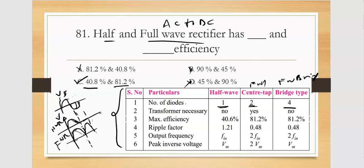The transformer is necessary for center tap but not for bridge type, which uses negative cycles. So the answer is 81.2% and 40.8%. The ripple factor is very important. Half-wave will be 1.21 and full-wave will be 0.48.